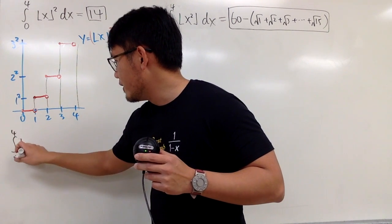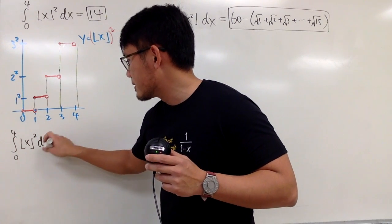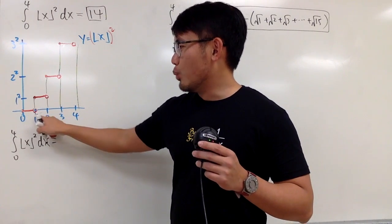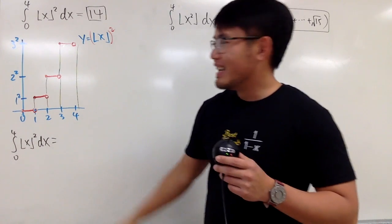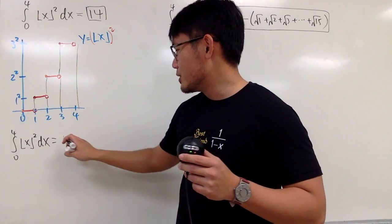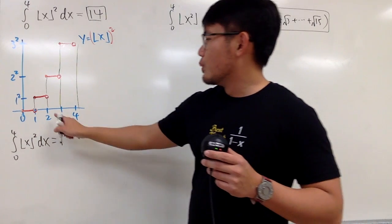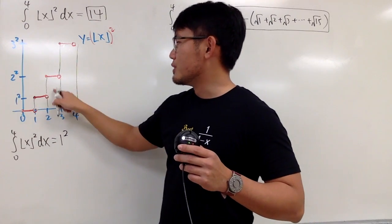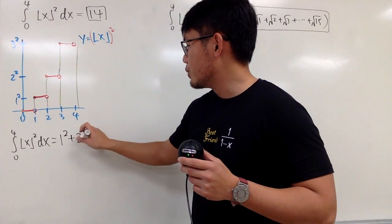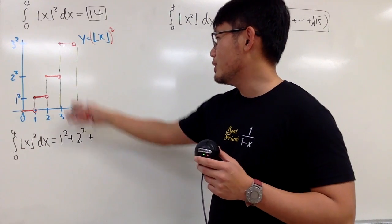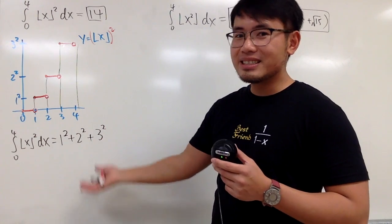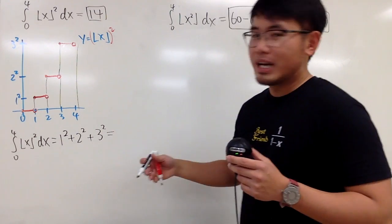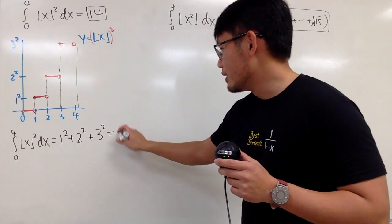The integral from 0 to 4 of (floor of x)² dx. First there's no area from 0 to 1. Then the width is 2 minus 1, which is 1, times the height, which is 1 squared. The next rectangle has width 1 and height 4, which is 2 squared. And then the next one is 3 squared. This is the sum of the first 3 squares. You end up with 14.